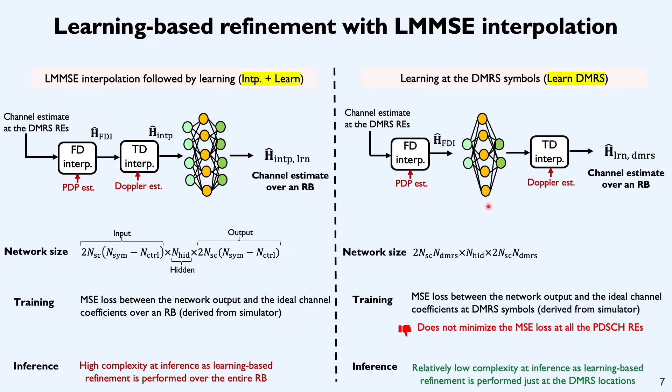One way to reduce the complexity is to use a smaller neural network sandwiched between the FD interpolation and the TD interpolation blocks. How do we train this neural network? One way to train it could be by minimizing the MSE loss between the network output and the ideal channel subsampled exactly at the DMRS symbol locations. And why is it a reasonable objective? It's because in an ideal setting, H hat FDI is the subsampled version of the ideal channel exactly at the DMRS symbol locations. By minimizing the MSE loss between the network output and the subsampled version of the ideal channel, we hope that the network converges to reasonable weights. This approach has relatively low complexity when compared to the approach on the left. However, the key challenge with this approach is that it doesn't minimize the MSE loss at all the PDSCH REs and minimizing the MSE loss at those REs is extremely important because ultimately the block error rate depends on the channel quality at the PDSCH REs.